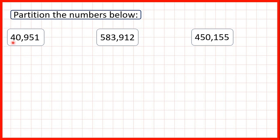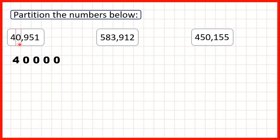First we have 40,951. This 4 is in our 10,000s, so that represents 40,000 — that's 4 followed by 4 zeros, because we can see in our number that after the 4 we have 4 digits. Now we have zero in our thousands, but we don't partition zeros because whatever place value a zero is in, its value is just zero. Zeros in numbers act as placeholders, so they give the other digits their value but they don't have any value in themselves.